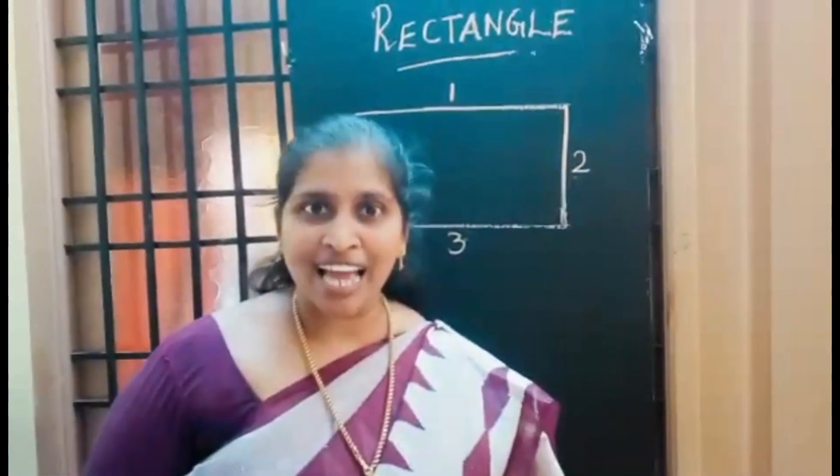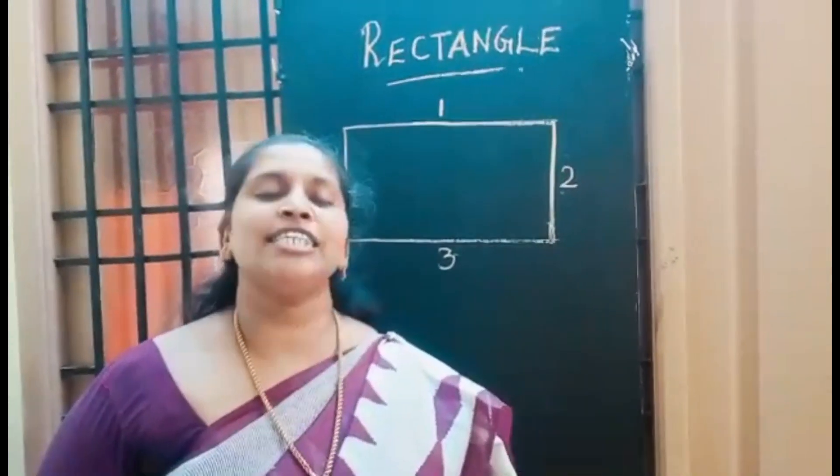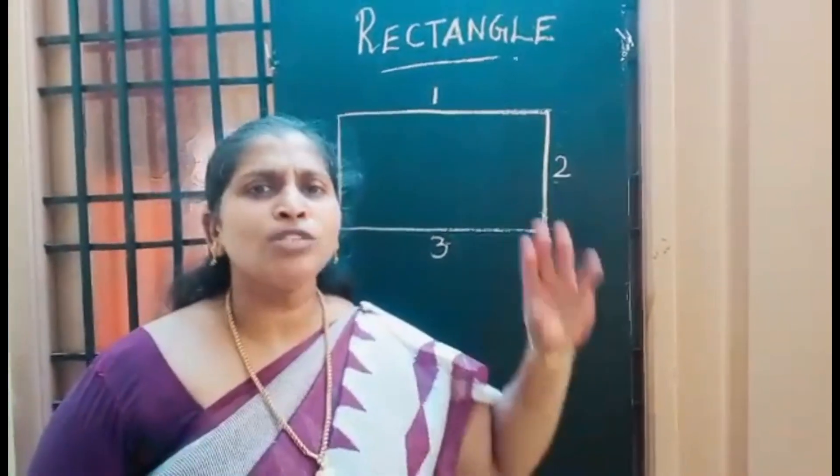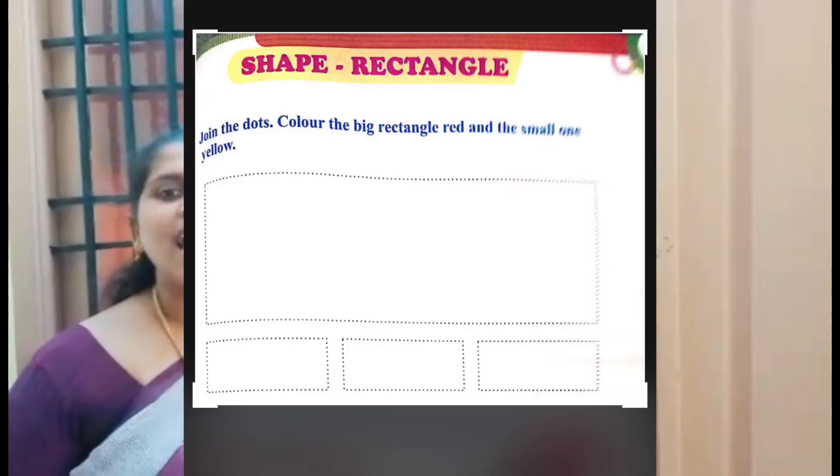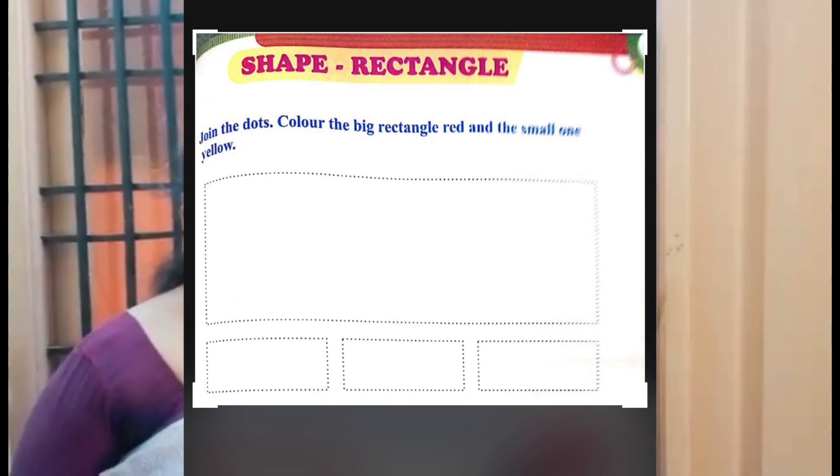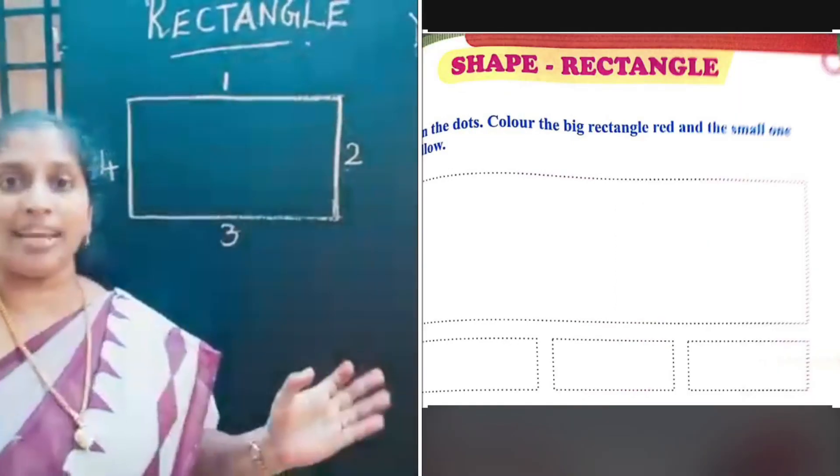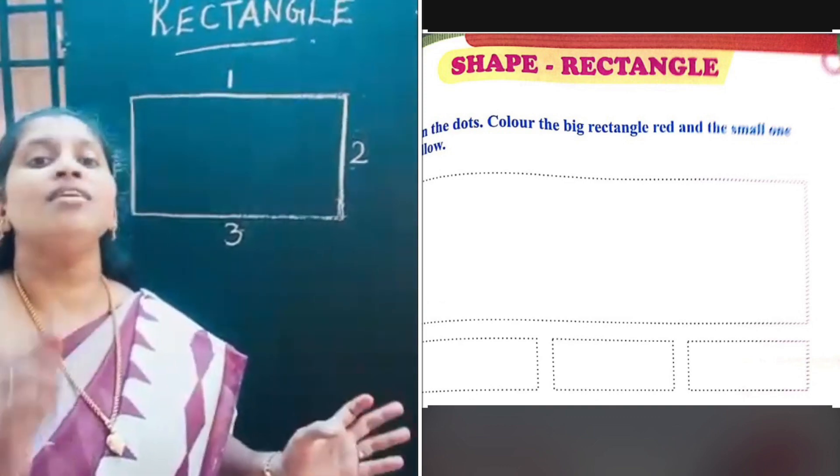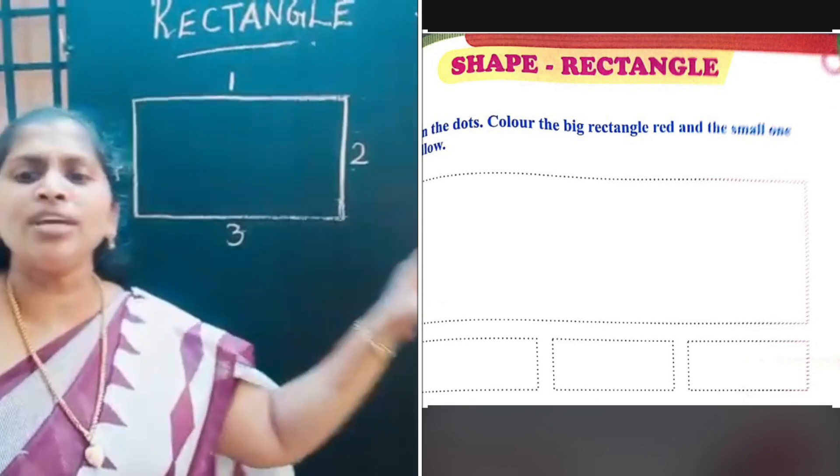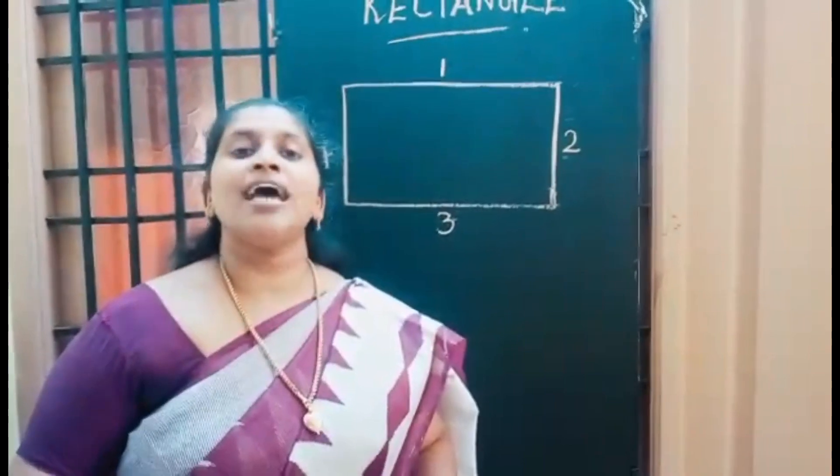Okay kids, now see this activity sheet. Here it is given as join the dots, color the big rectangle red and the small one yellow. On top they have given big rectangle, color that with red color. Below that big rectangle they have given three small rectangles, color that with yellow.